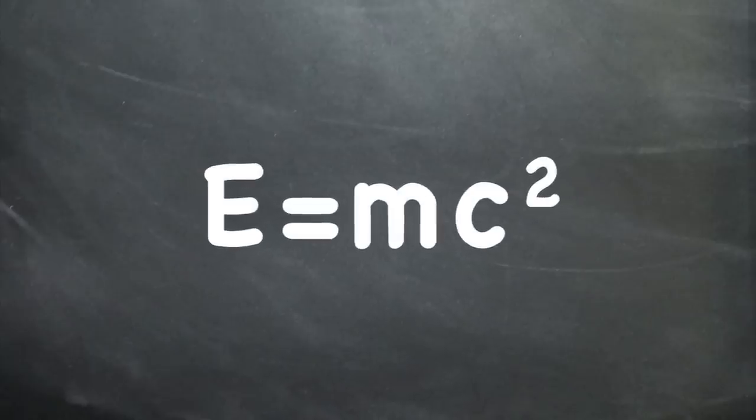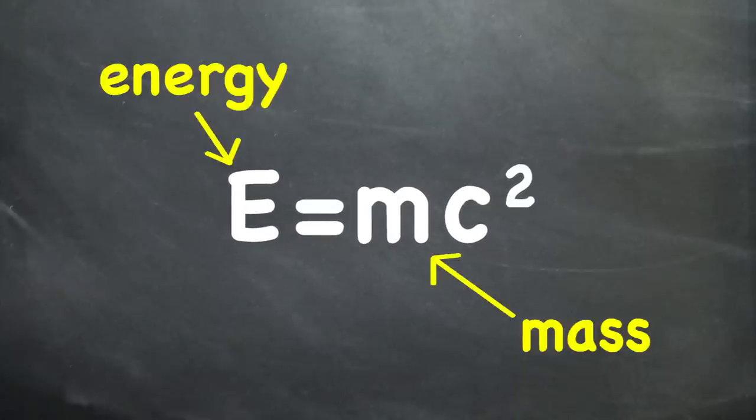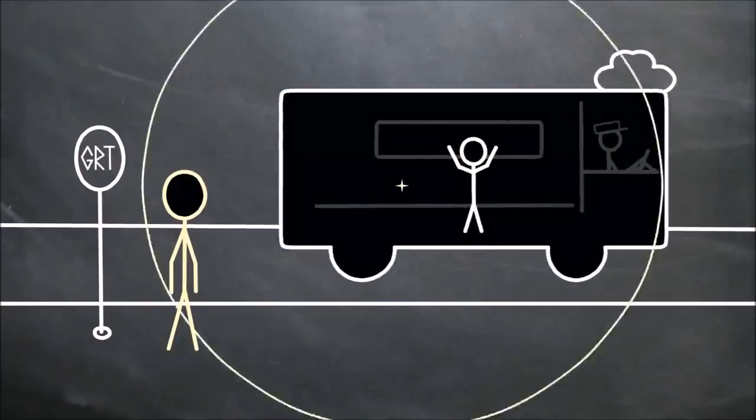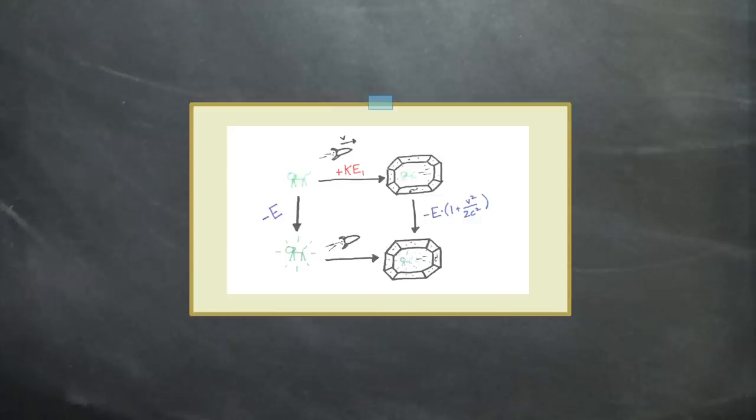E equals mc squared. Everyone's heard of it, but what does it mean? How does a relationship between mass and energy arise from special relativity, a theory which seems to be more about the nature of space and time? Einstein derived this formula using relative observers and the Doppler effect, which you can see in this video from MinutePhysics.